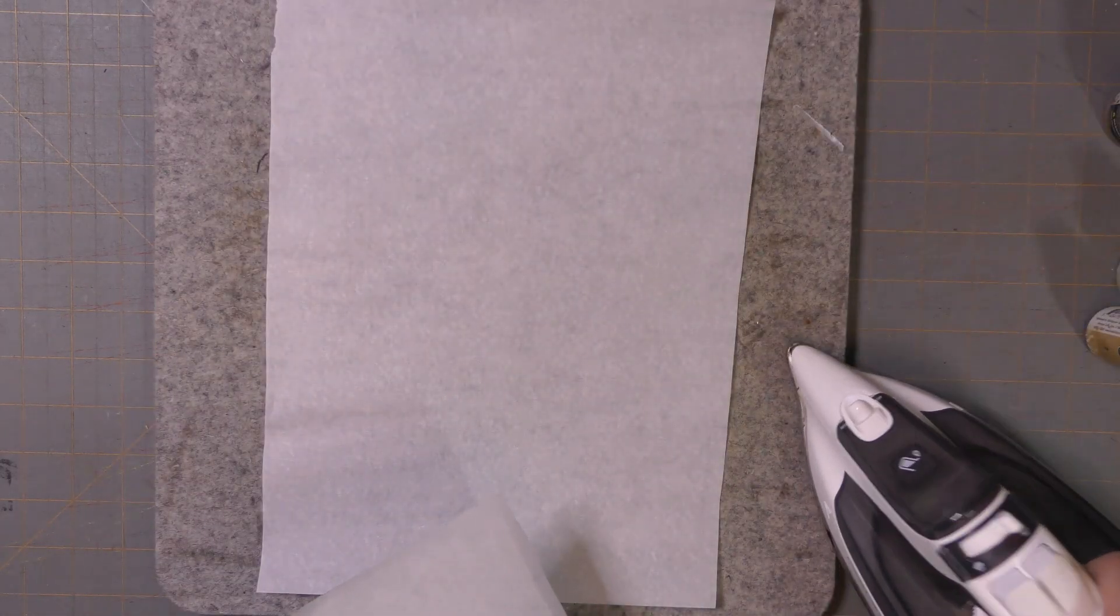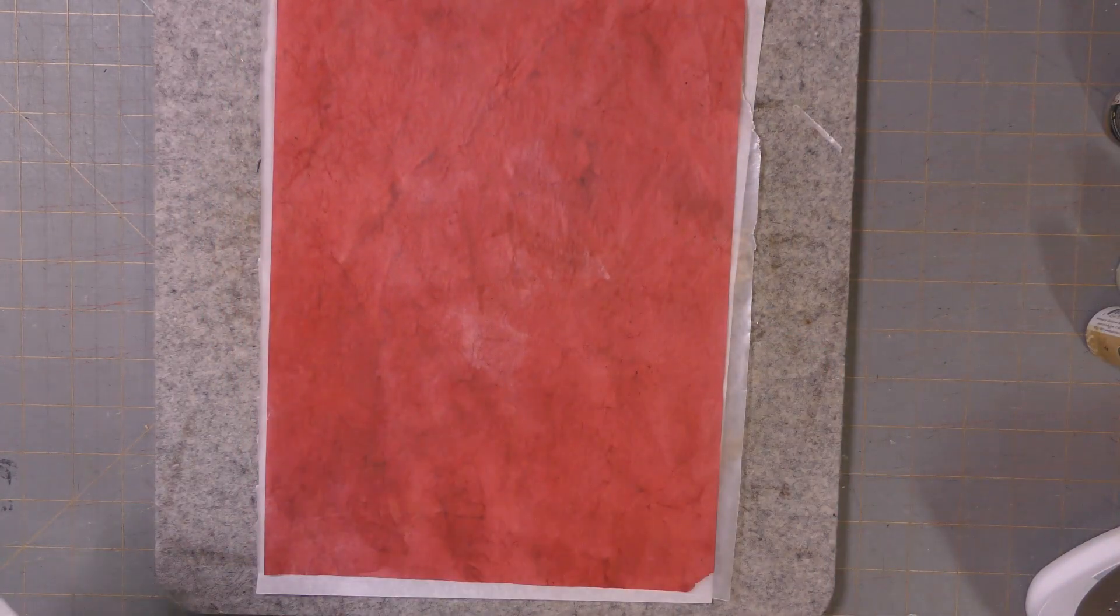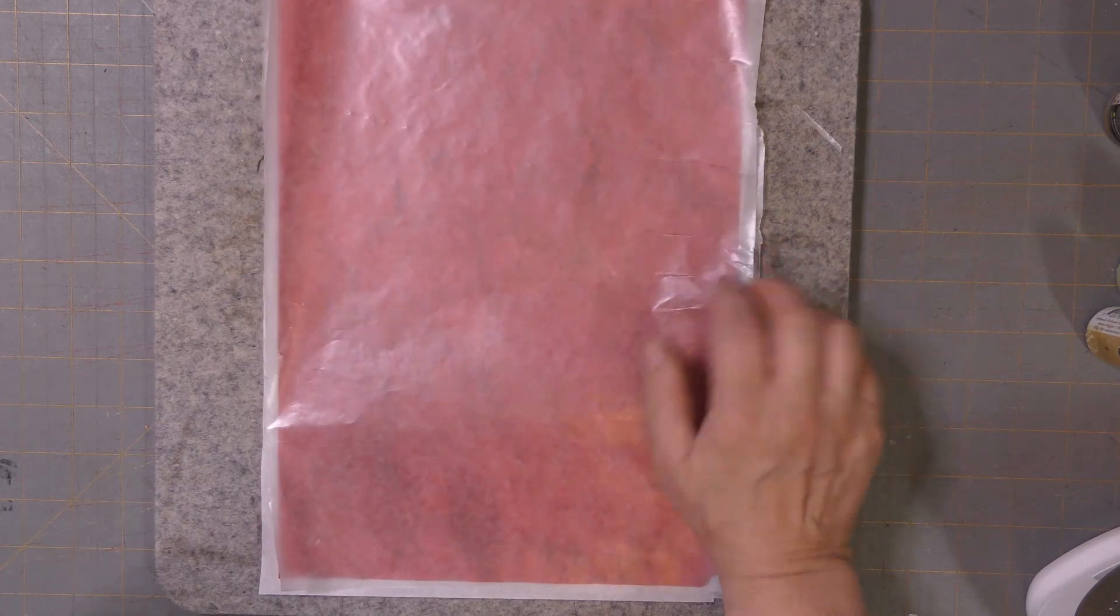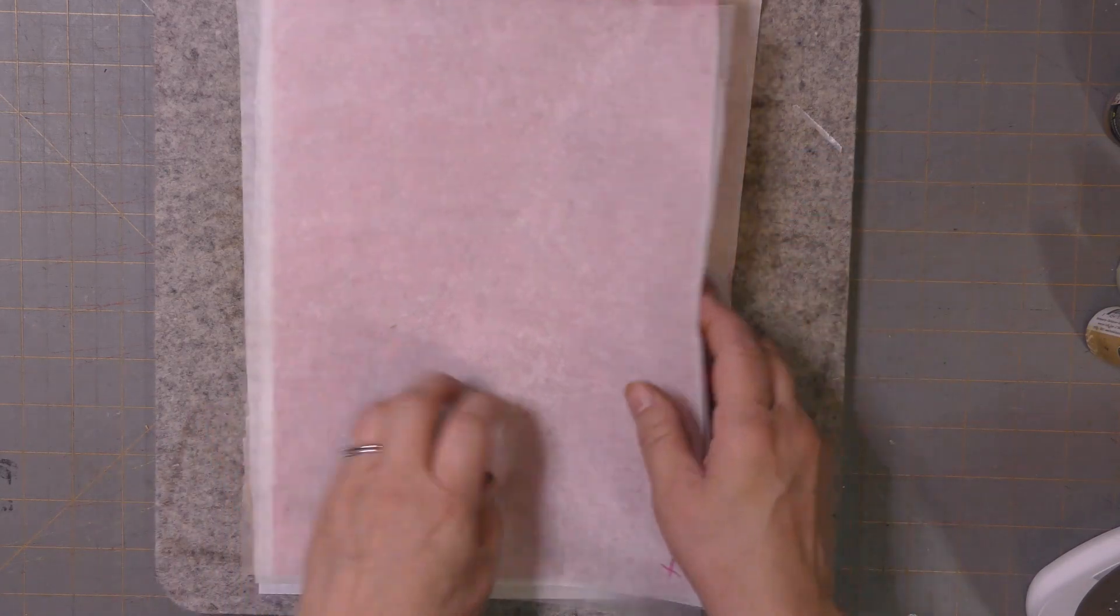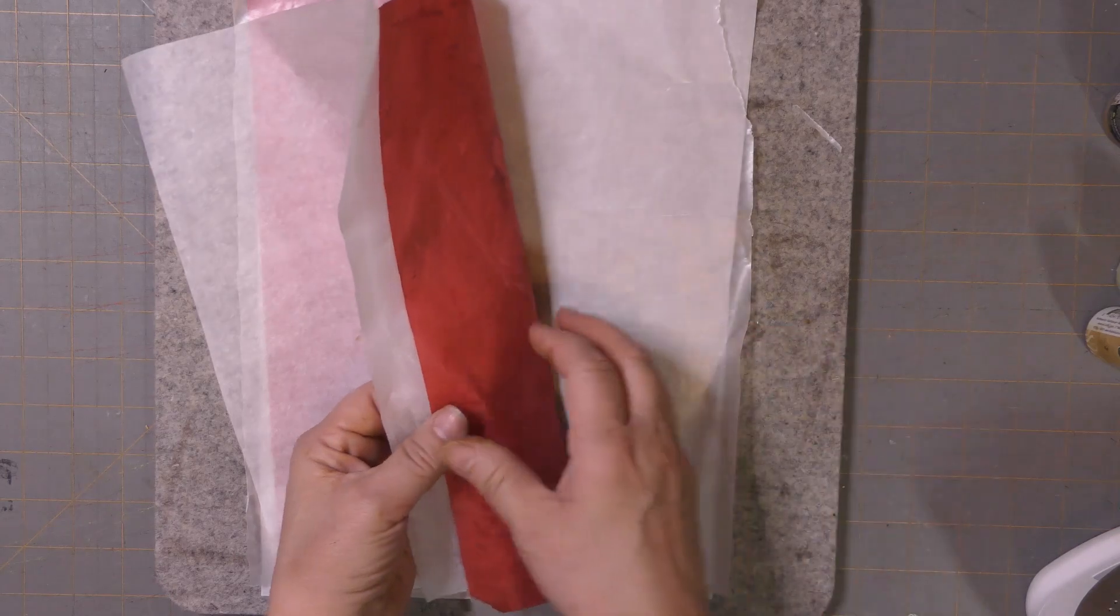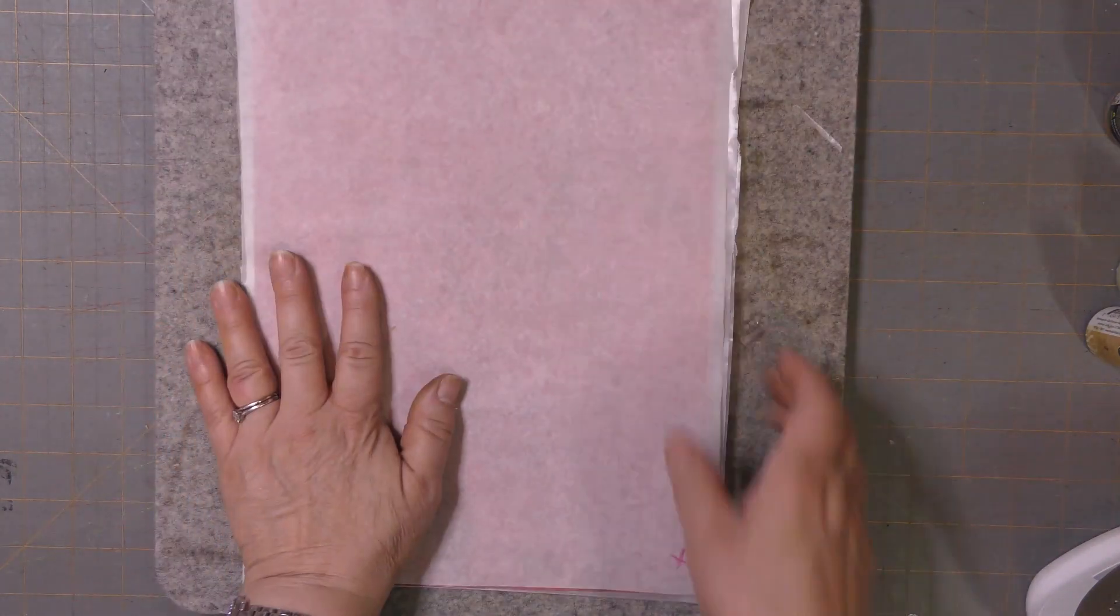Your iron should be on a medium setting, not too hot. The hotter it is, the more wrinkled your paper will get. Take your ironing pad, place a parchment paper on top, then a waxed paper. Next, grab one of your colored papers—this will also make your paper more translucent, which is fun. Put wax paper on top of that, and then parchment on top. You're making a sandwich.